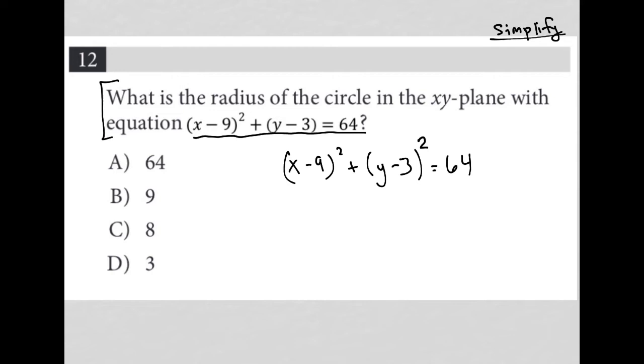So the general circle equation is x minus h squared plus y minus k squared equals r squared.